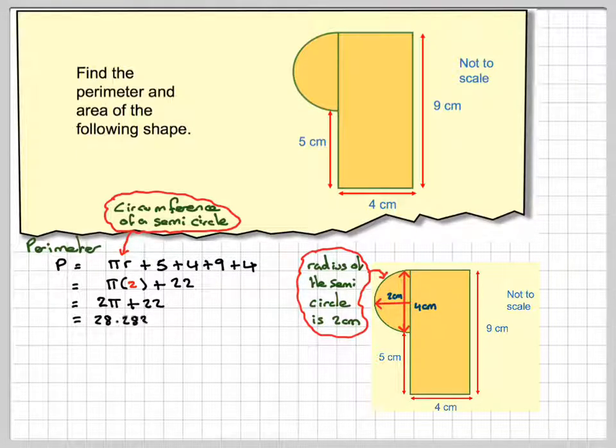If we take our calculator out, that gives me 28.283 cm, and then normally we round off to three significant figures, so it becomes 28.3 cm.